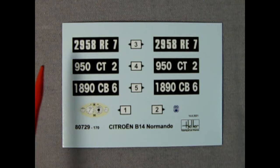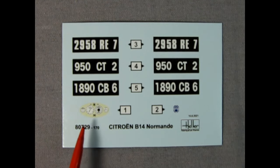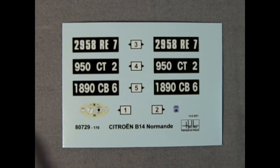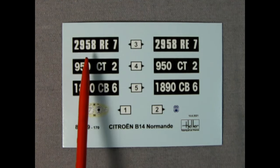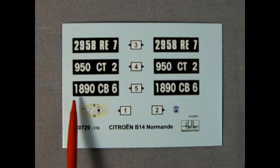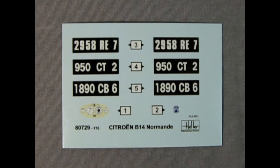The decal sheet includes three license plates, a dashboard instrument cluster and the Citroën logo for the front of the radiator. Our license plates are 2958 RE7, 950 CT2 and 1890 CB6.